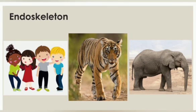Endoskeleton is a skeleton that is inside the body. For example, humans and animals. Dear students, look at this picture. Can you see their skeleton? No, you can't see their skeleton. Why? Because their skeletons are inside their body.